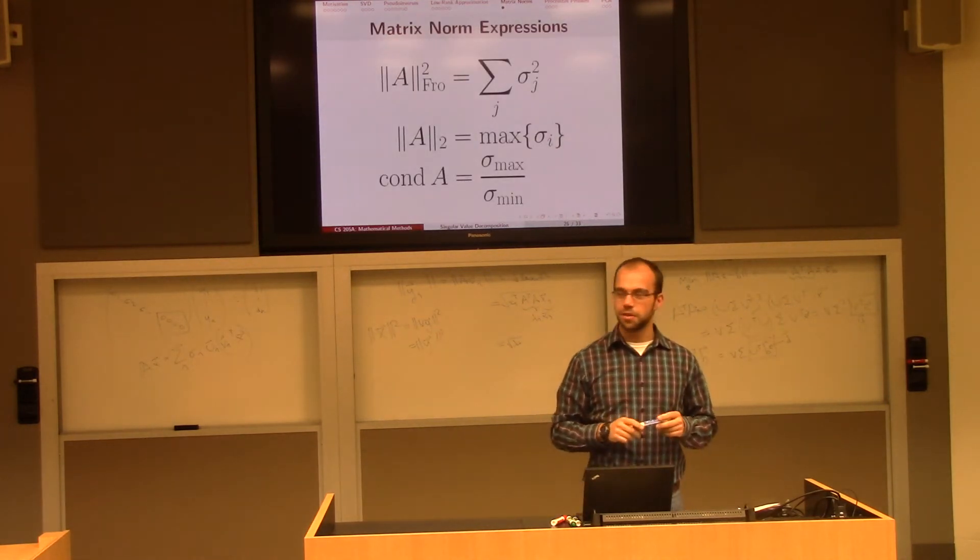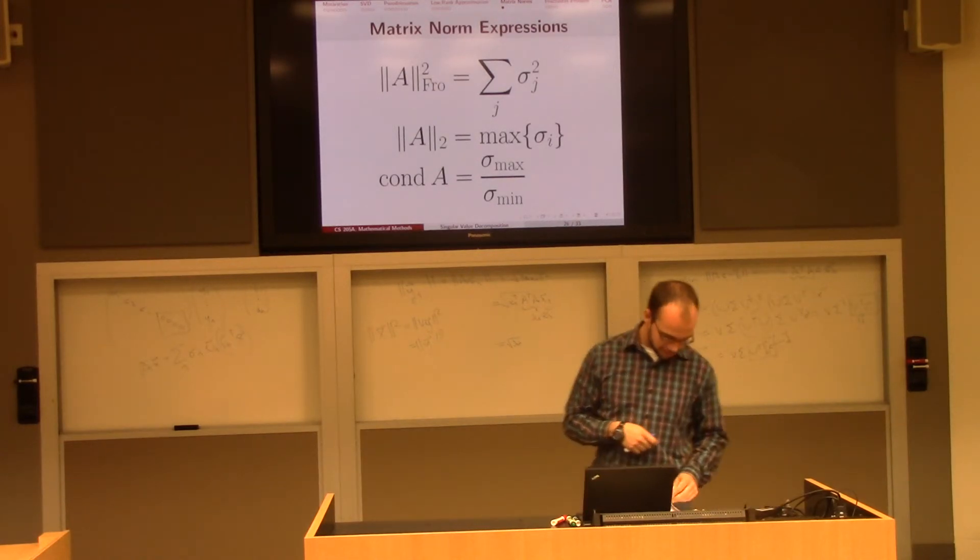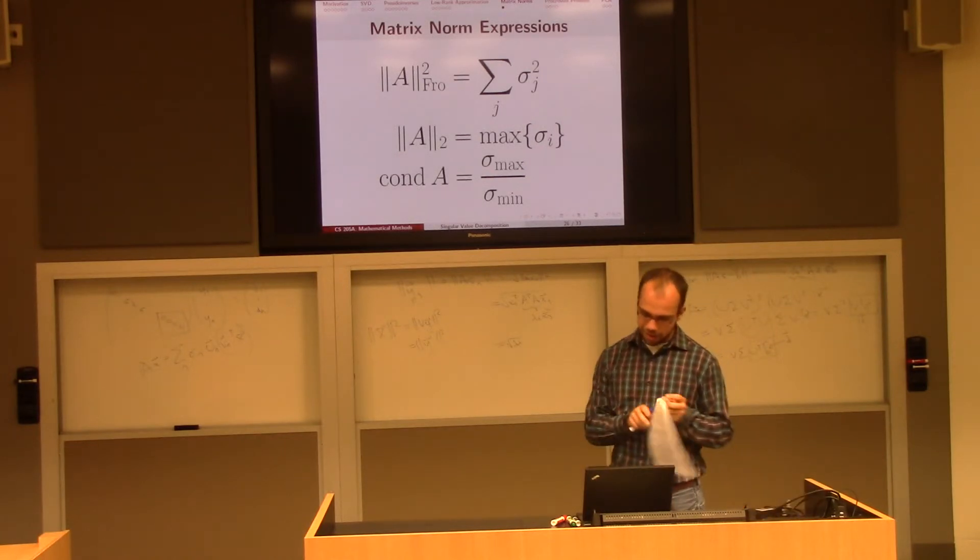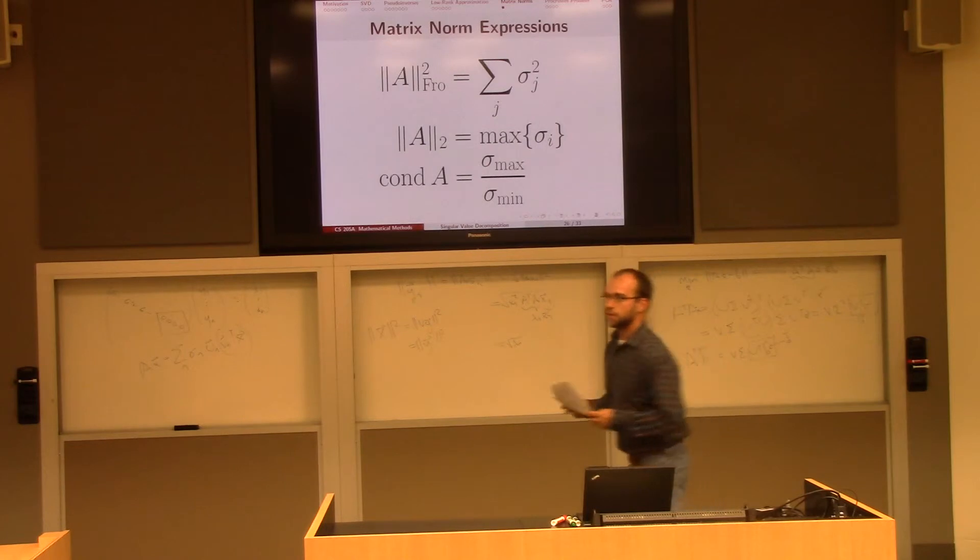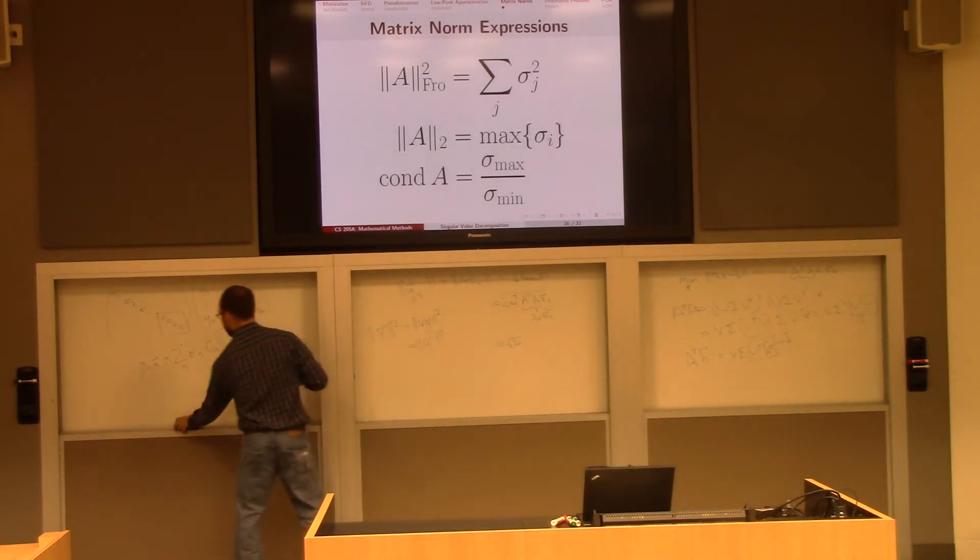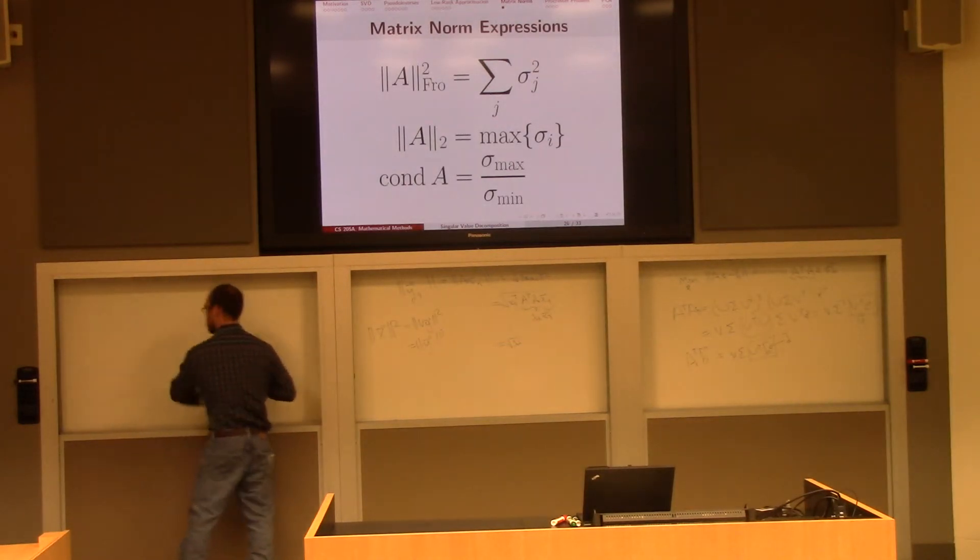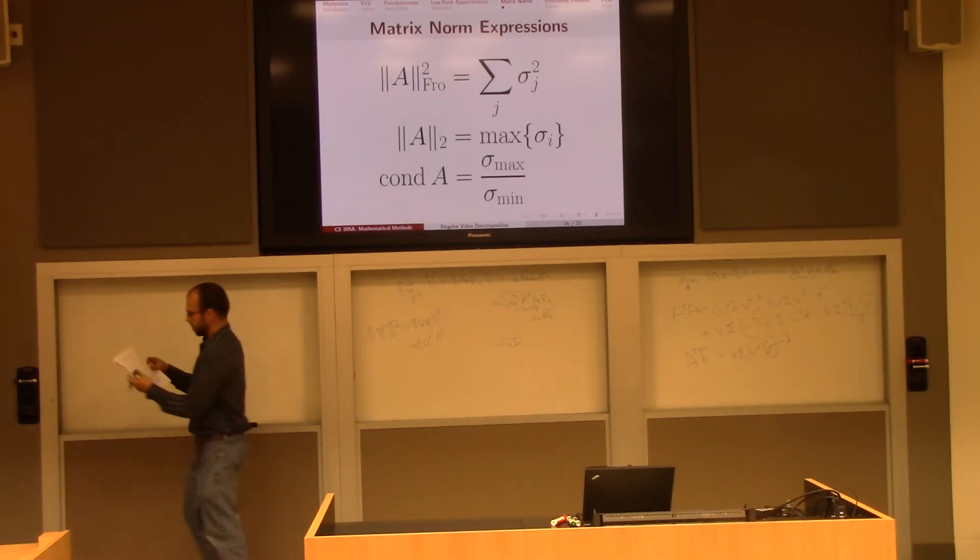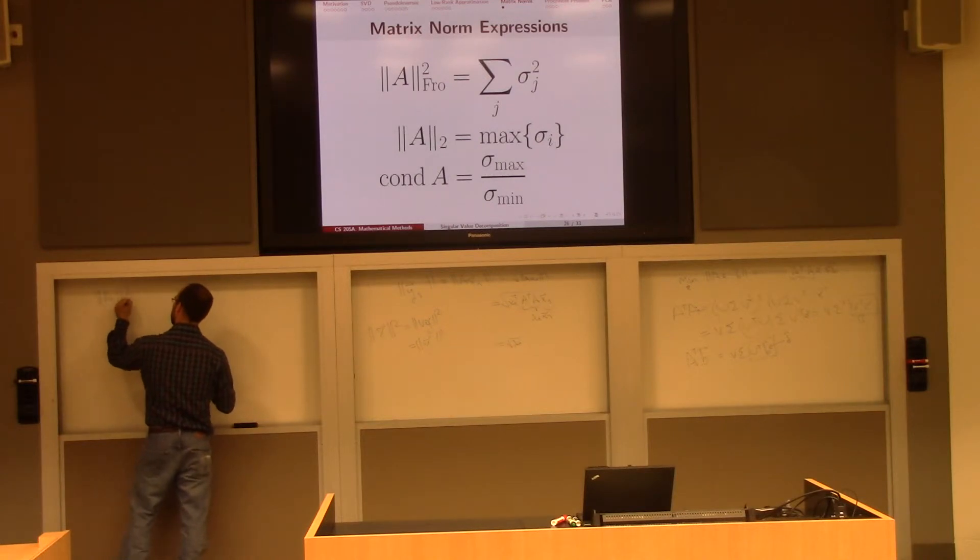So there are lots of other things we can do with our matrix here, with our decomposition rather. One of them, and then I guess we'll stop for today, is to find the Frobenius norm of A. What is that? Well, if you guys will let me indulge it after two and a half minutes, then we'll stop. By the way, the Frobenius norm appears in the homework, so you should be intimately familiar with it now. You've struggled for hours on this system.